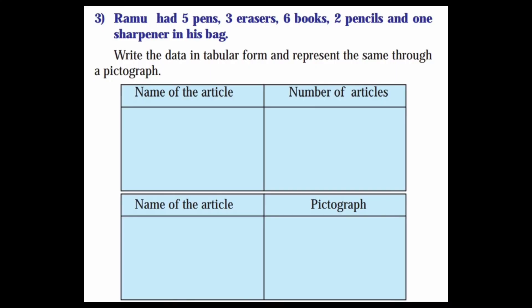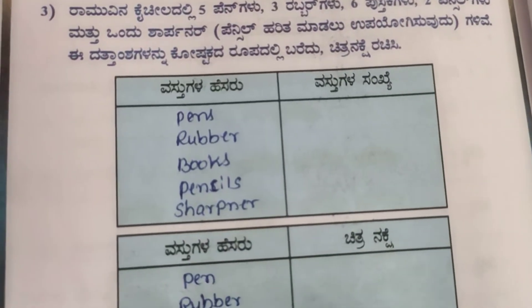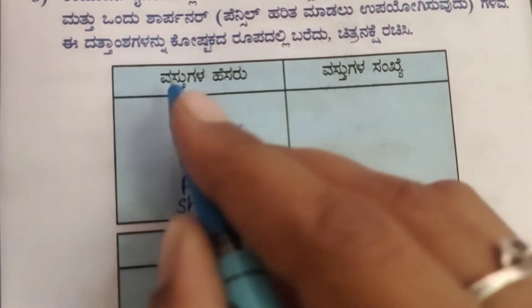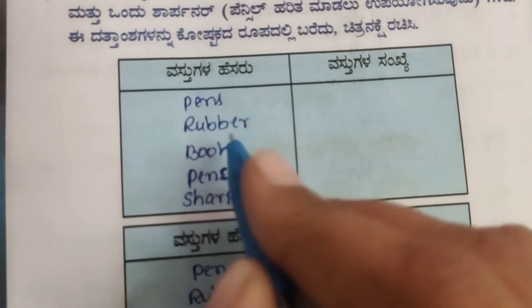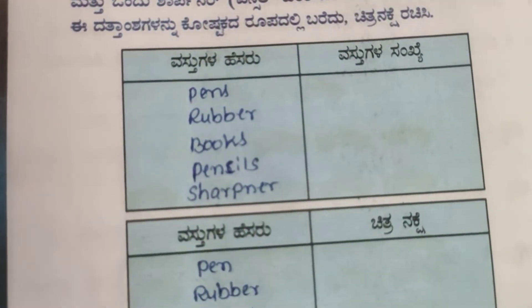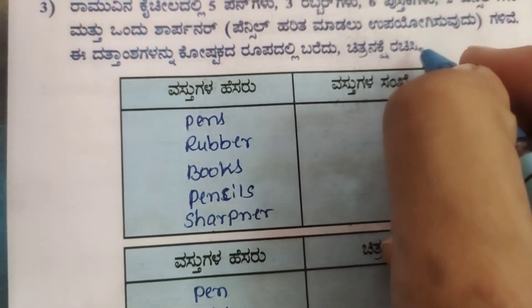Third question: Ramu had 5 pens, 5 erasers, 6 books, 2 pencils and 1 sharpener in his bag. Write the data in tabular form and represent the same through a pictograph.